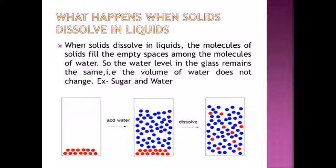Next we will discuss what happens when solids dissolve in liquids. Some solids like sugar and salt can be dissolved in liquids. When solids dissolve in liquids, the molecules of solids fill the empty spaces among the molecules of water, so the water level in the glass remains the same — the volume of water does not change.